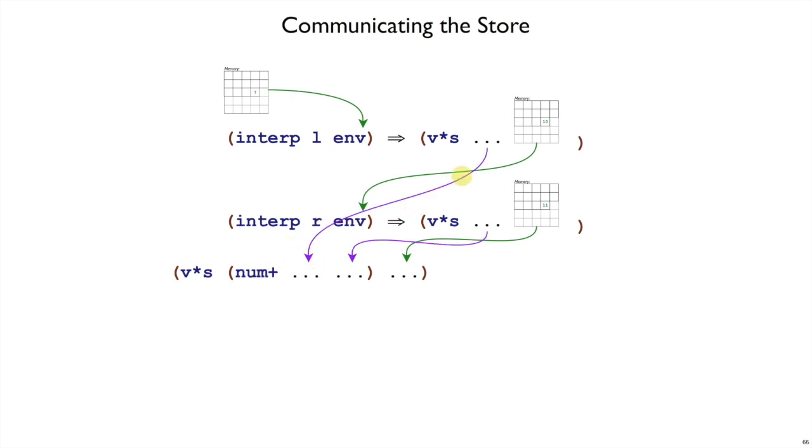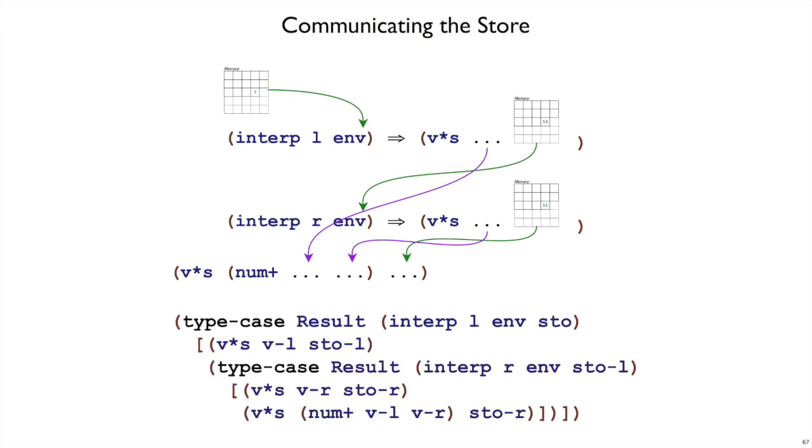Meanwhile, numplus is adding the two numbers that were the value components of those two calls to interp. When we take this picture and put it in code form, it looks like this. The first call to interp, where the current store, we're going to use the variable stow for that. That'll be an argument to interp.